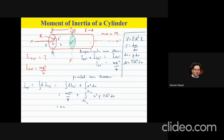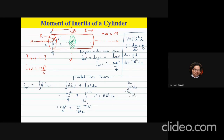The first expression stays the same. For the second term, ρ is constant and is given as mass divided by volume. The total volume is πr²l. Pi and r² can come out of the integral, leaving only x² dx. The integral of x² dx from −l/2 to l/2 gives x³/3.